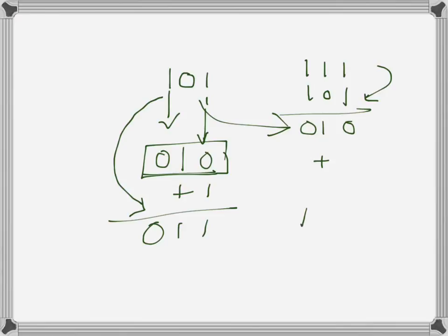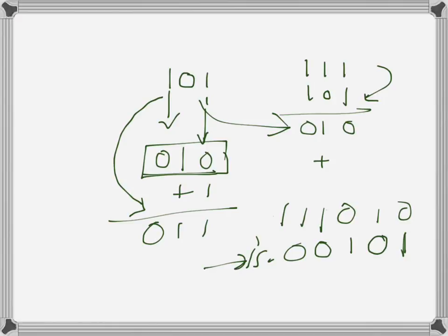This works for any number of bits. For example, with a five-bit binary number, if we want to find the one's complement, we invert each bit — so the result would be 10100. That is the one's complement of the original number.